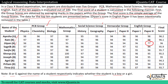To find the group score of a particular person — for example, for Ayesha in the PCB group — we find the average of 98, 96 and 97. That will be the group score of Ayesha for the PCB group. Similarly we find the average for Mathematics, Social Science, Vernacular and English groups. To find the final score of Ayesha, we find the average of all five group scores — PCB, Mathematics, Social Science, Vernacular and English — add them all and divide by 5.